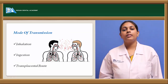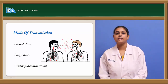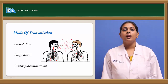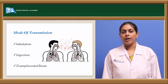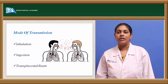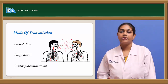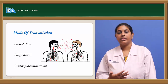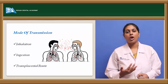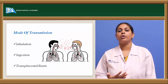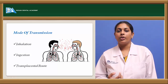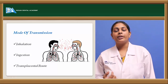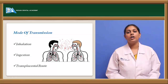Coming to the mode of transmission: the patient most commonly acquires tuberculosis by inhalation — from an already infected person who coughs, releasing droplets into the atmosphere which are inhaled by a healthy individual. This is mainly carried by macrophages. Coming to ingestion: if a patient consumes food or water contaminated with bacilli, this is another mode of transmission.